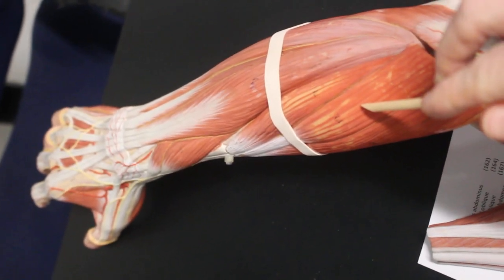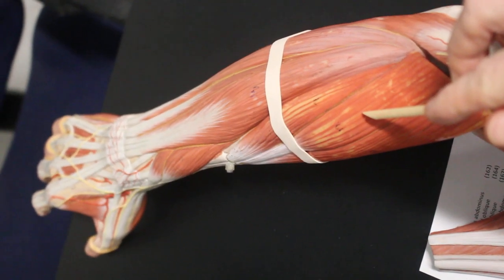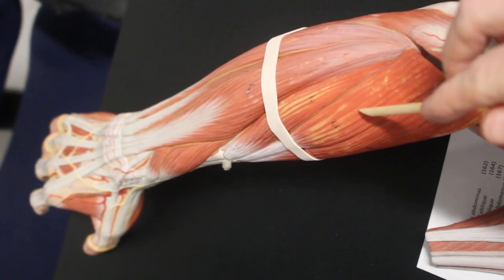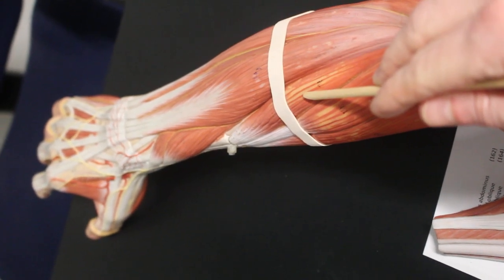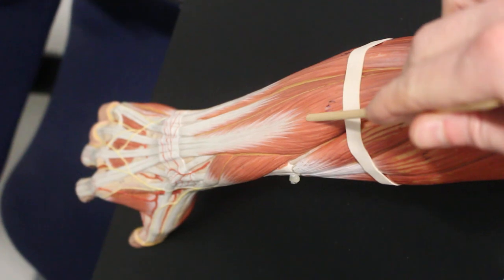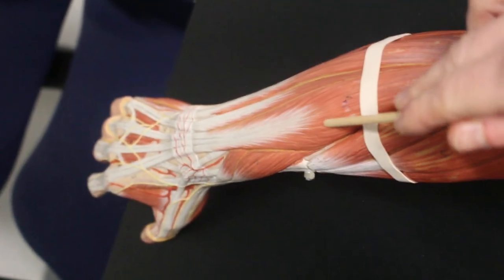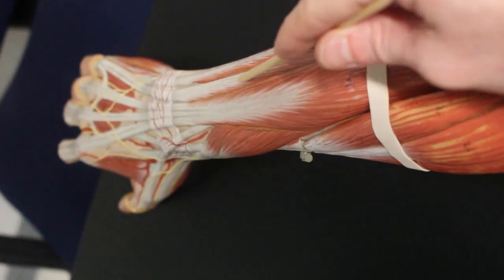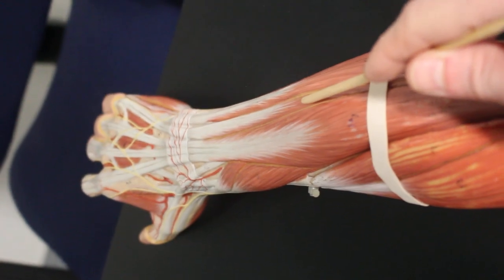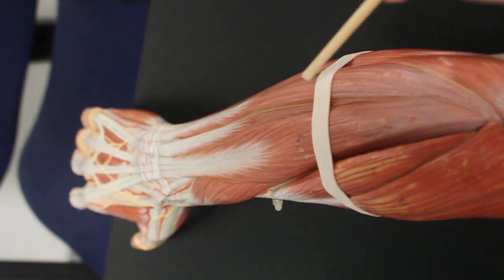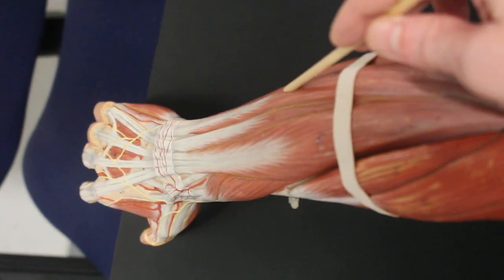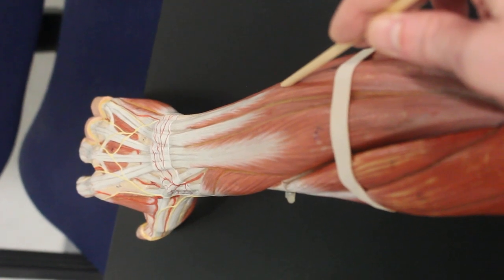Here is extensor carpi radialis longus, extensor carpi radialis brevis. This is extensor digitorum, going toward the fingers. This little muscle here, going toward the pinky, is extensor digiti minimi. This muscle here is extensor carpi ulnaris.